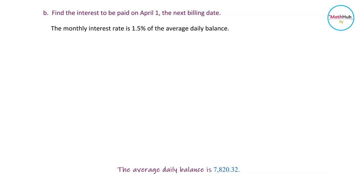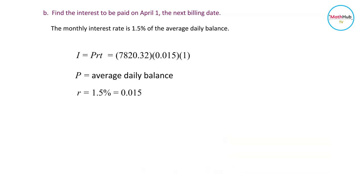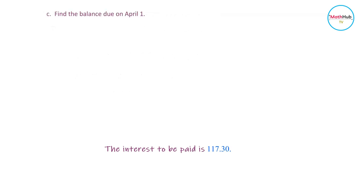It is given that the monthly interest rate is 1.5 percent of the average daily balance. We computed the average daily balance to be 7,820.32. Using the simple interest formula I = P × R × T, the principal is the average daily balance 7,820.32, multiplied by 1.5 percent (0.015), times one month, and that equals 117.30.